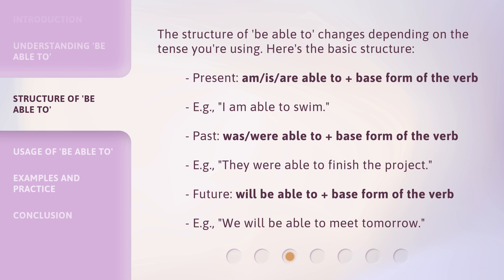Past: was, were able to, plus the base form of the verb. For example: They were able to finish the project. Future: will be able to, plus the base form of the verb. For example: We will be able to meet tomorrow.